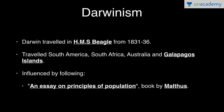So here we will be dealing with Darwinism. Darwin travelled in HMS Beagle from 1831 to 1836, making a sea voyage in a sail ship named HMS Beagle. He travelled around the world — South America, South Africa, Australia, and Galapagos Islands.